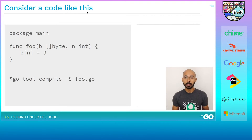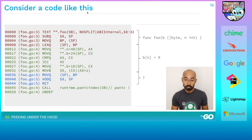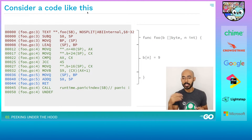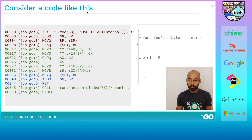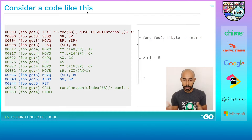Let's take a quick look under the hood of a bounds check to see what is really happening. Here's some sample code — we have a function where we pass a slice and an index, then set the value at that index to 9. The compiler doesn't know if n is within the length of p, so it has to introduce a bounds check. Let's look at the actual assembly generated to understand what's really going on.